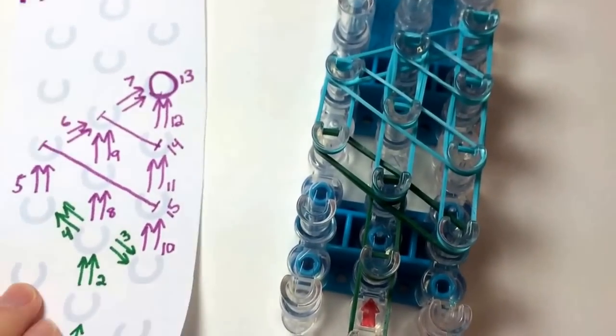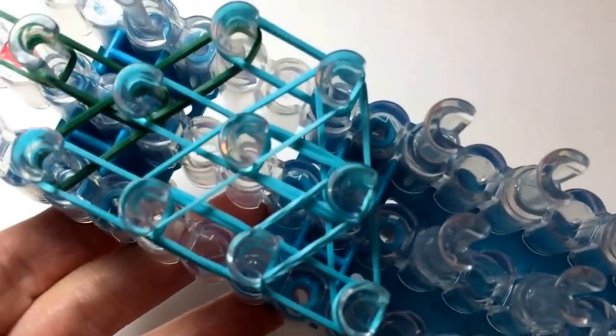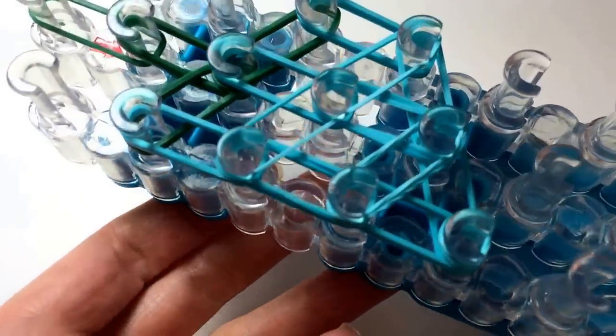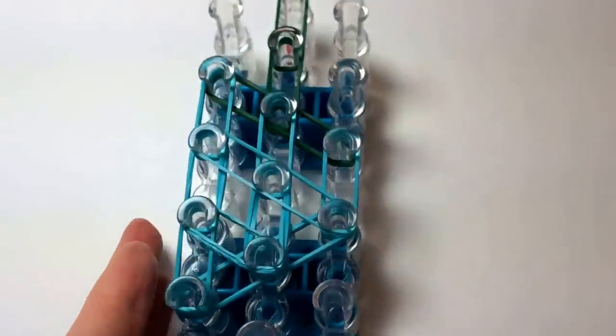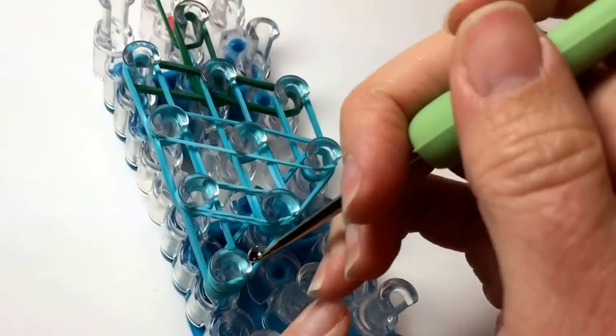Then we are ready to begin hooking. Confirm that your loom looks like mine does. Then turn it around and begin hooking from the bottom.